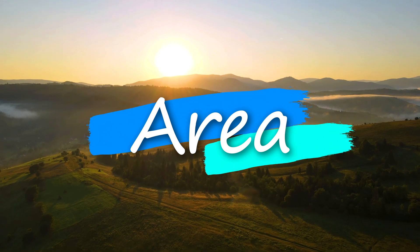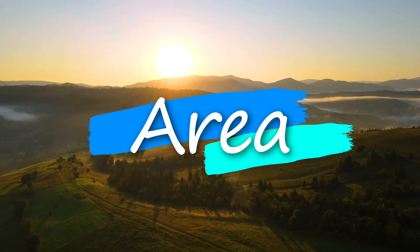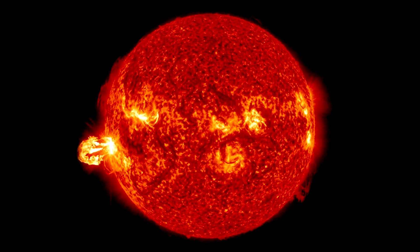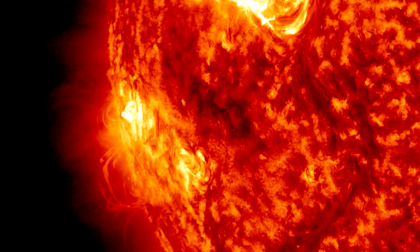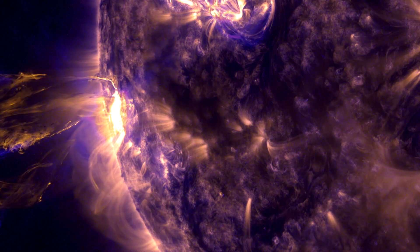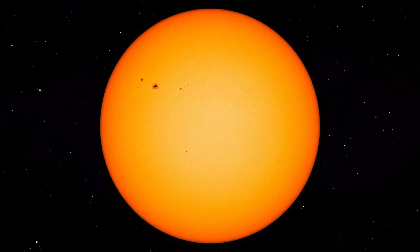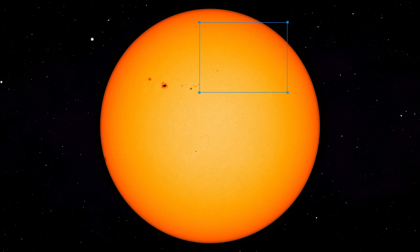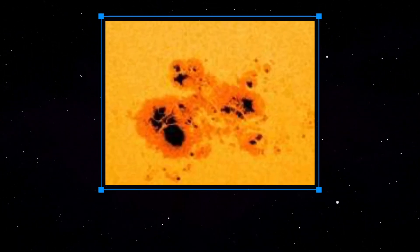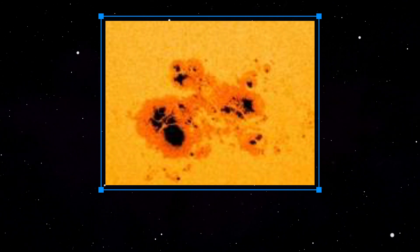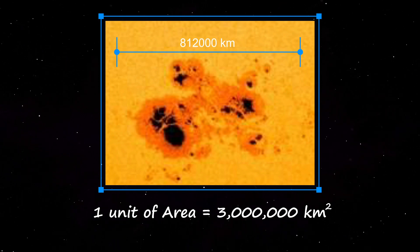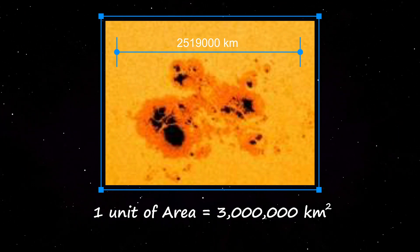Finally, the area measurement — probably the least understood measurement. Solar flares usually take place in active regions, which are areas on the sun marked by the presence of strong magnetic fields, typically associated with sunspot groups. A sunspot has size, which is represented by an area measurement. The area of a flare is commonly measured in units of one millionth of the visible solar hemisphere, and one millionth of the hemisphere is approximately three million square kilometers.